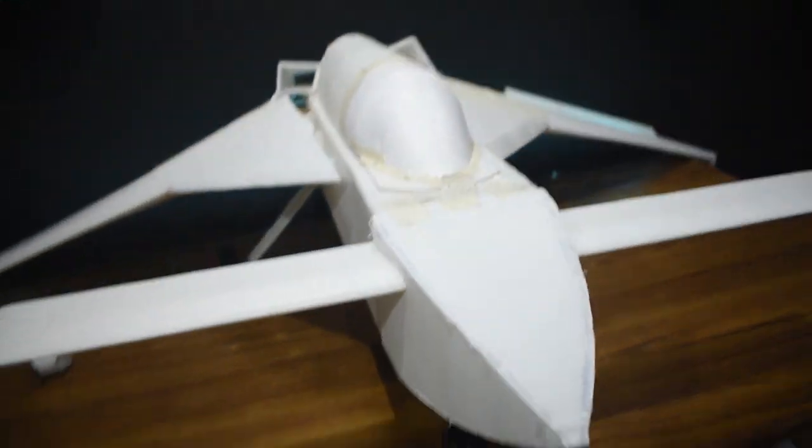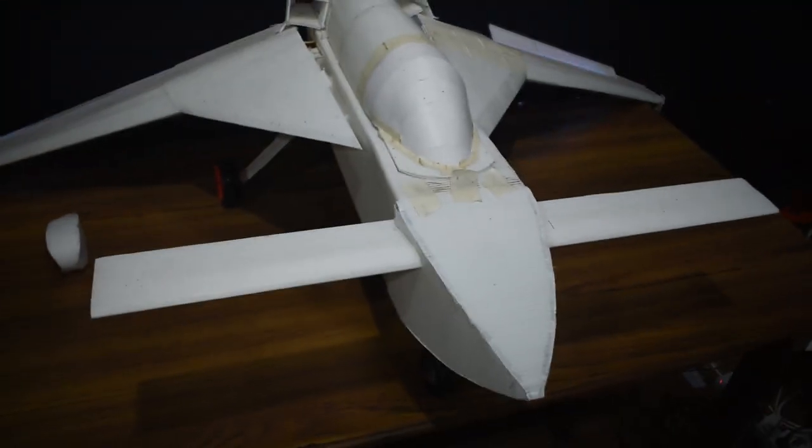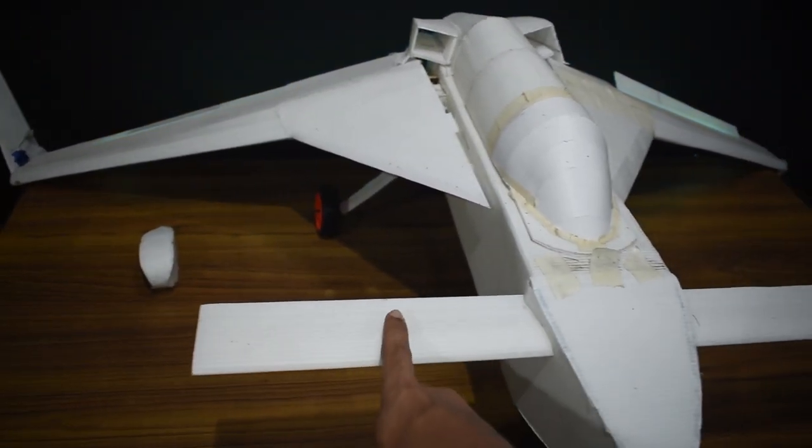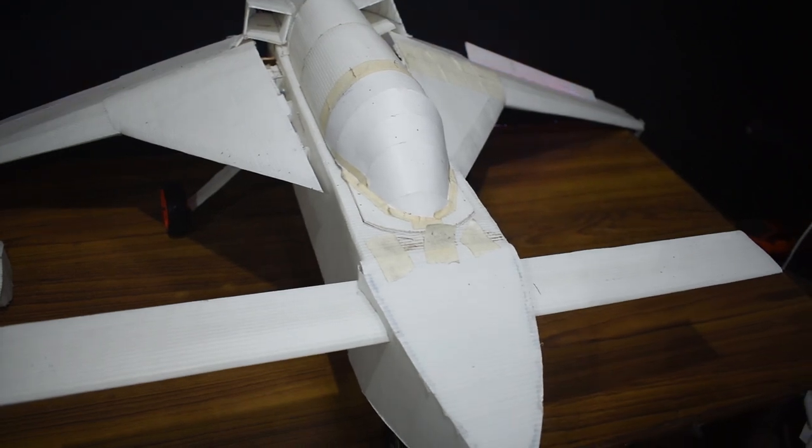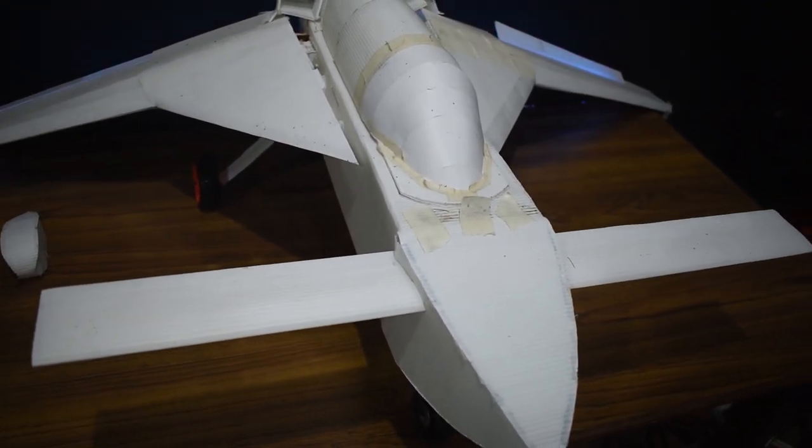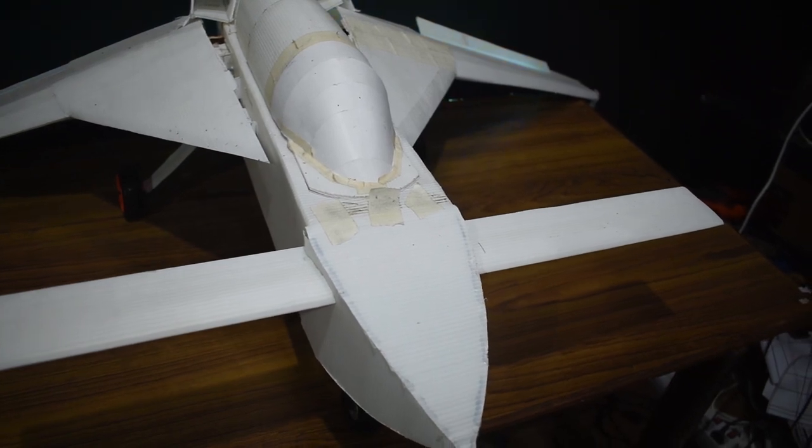At the front portion of the plane, I might add some canards, full working canards. How I'm going to implement them, I haven't decided whether I'm going to use a two servo mechanism or a single servo mechanism.